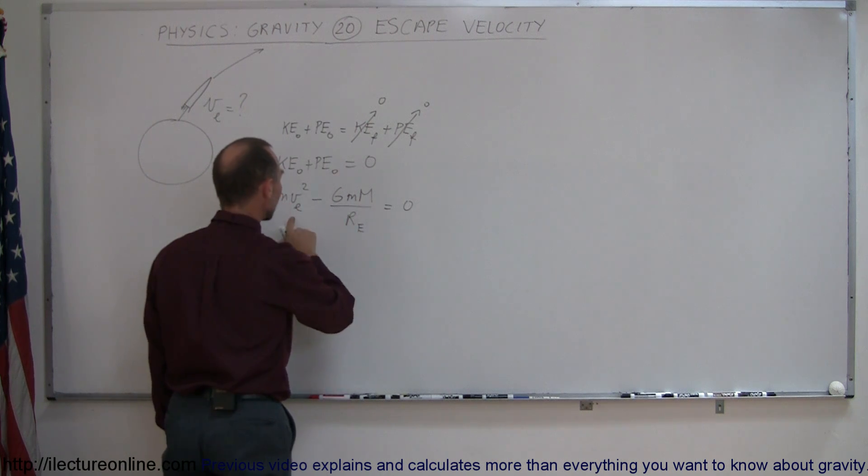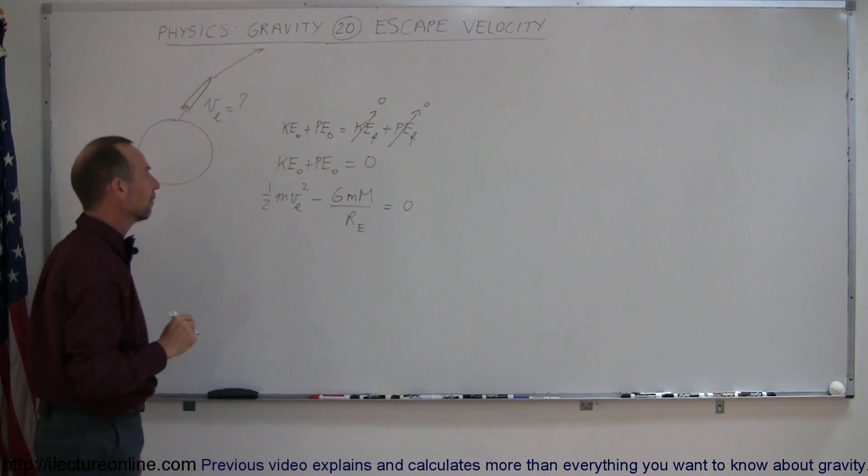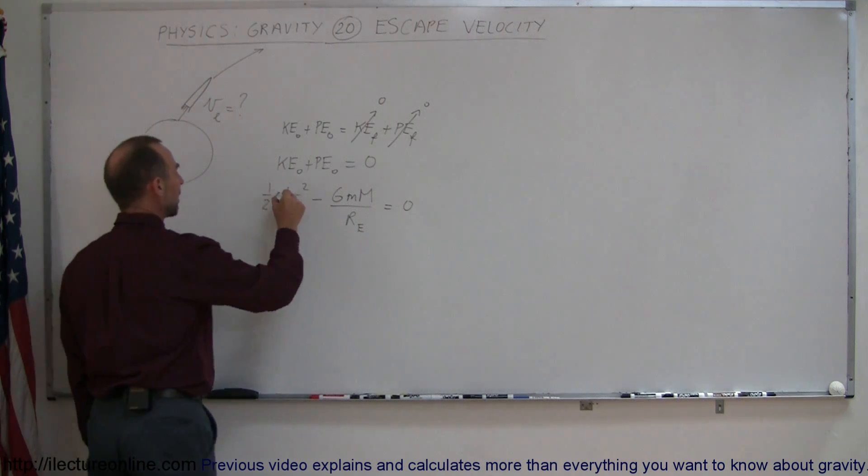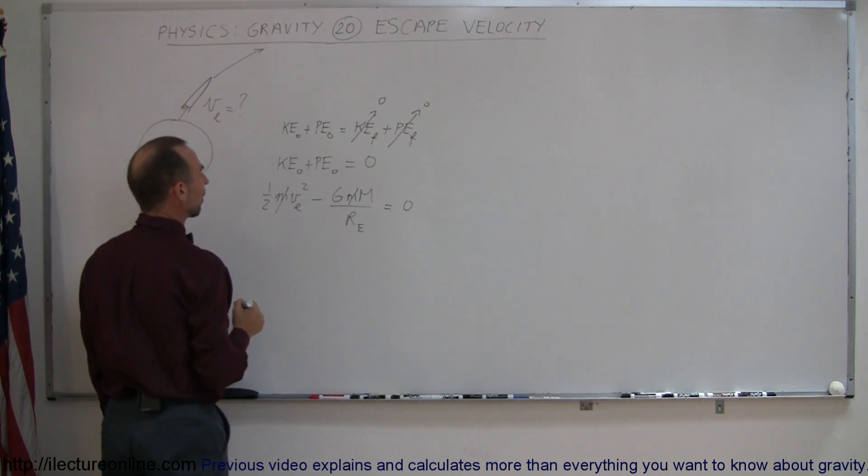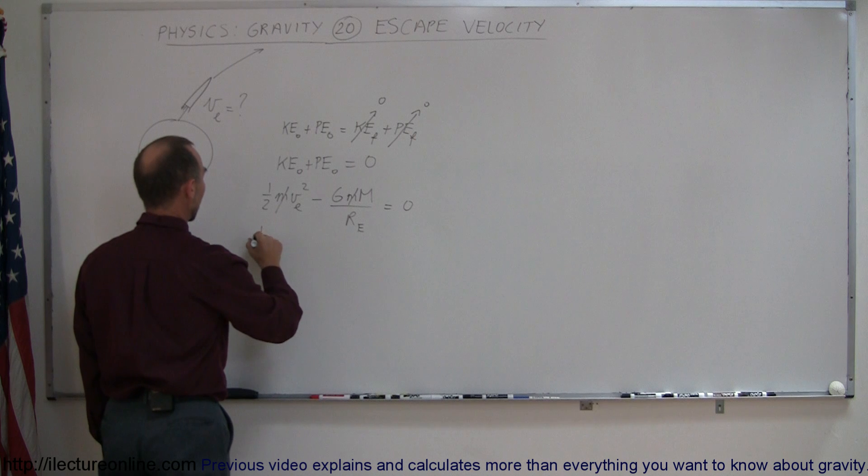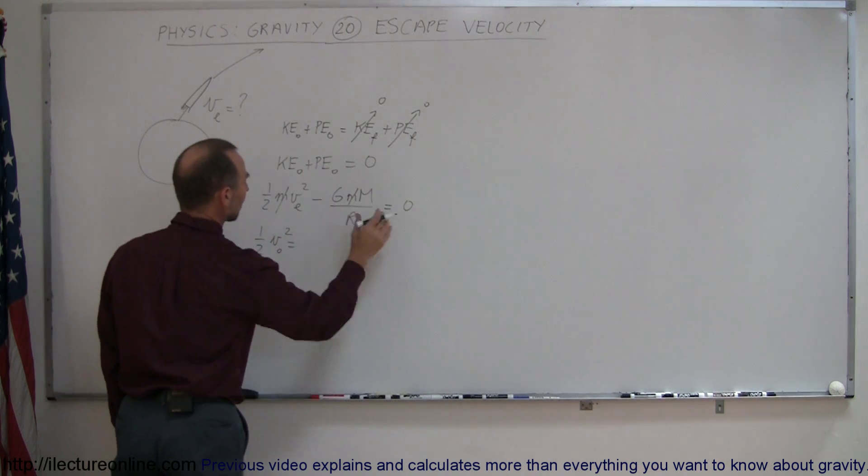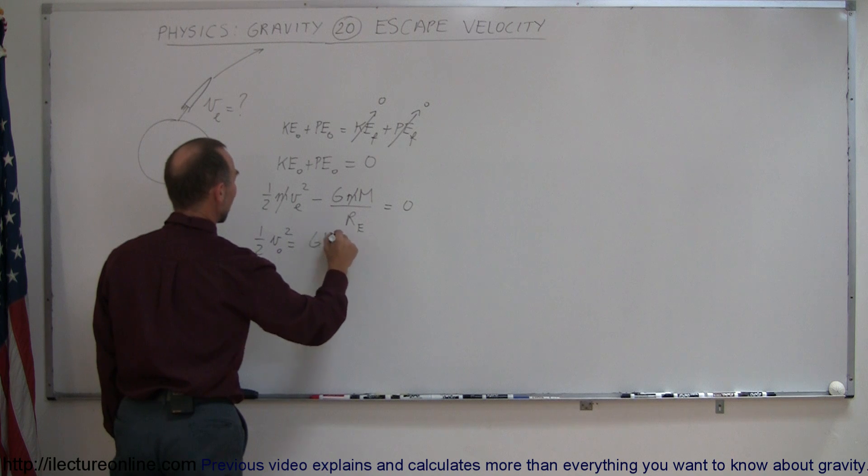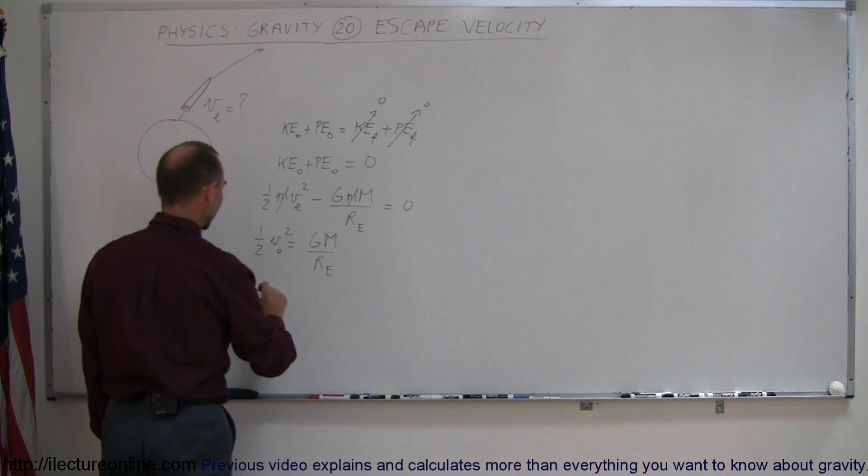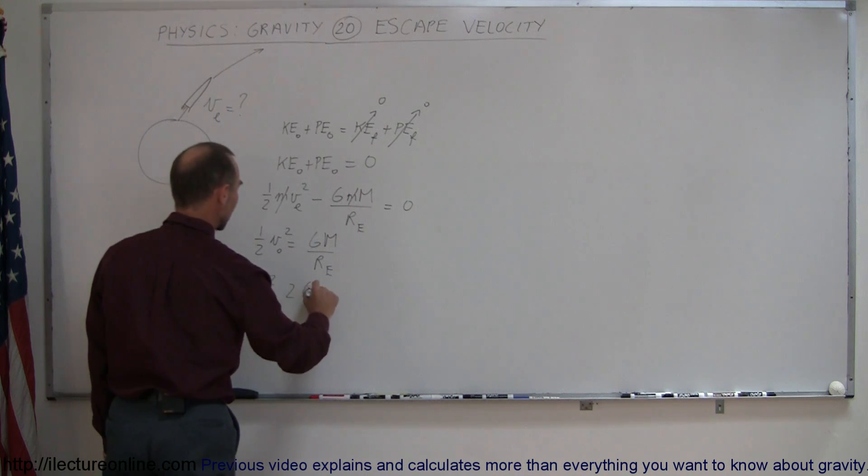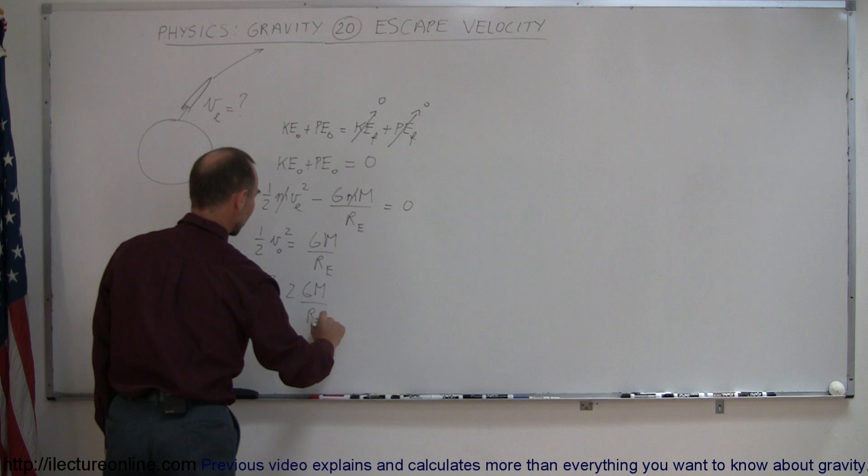So now we're going to solve this equation for velocity escape. First of all, you can see that the mass doesn't matter. That cancels out from both sides. Then we have one-half the escape velocity squared is equal to, bringing this to the other side it becomes positive, it's GM divided by the radius of the Earth. Then we multiply both sides by two. So we get v escape squared is equal to two times GM over the radius of the Earth.